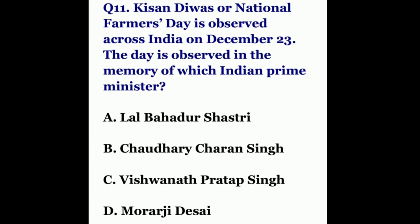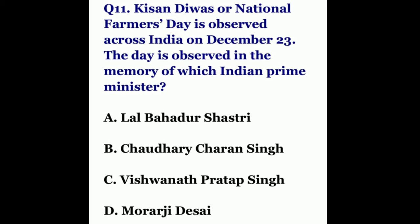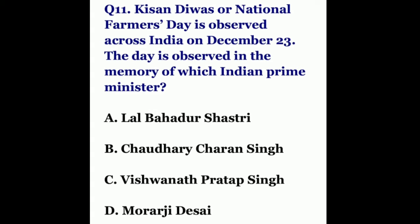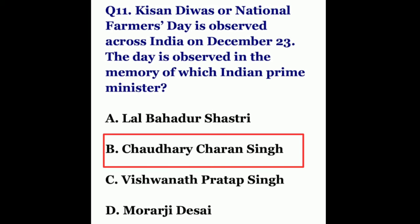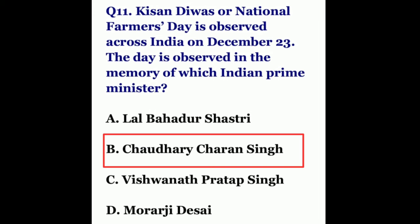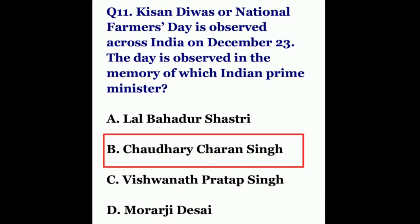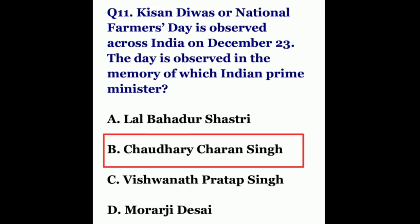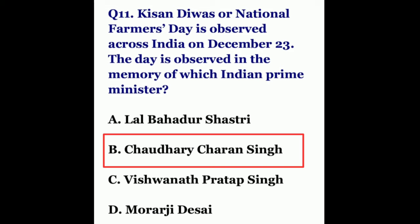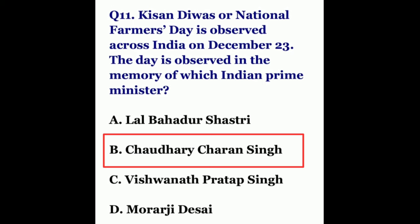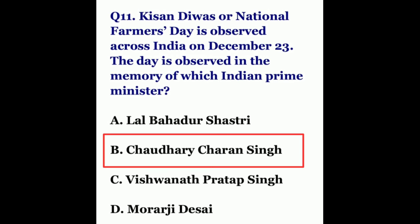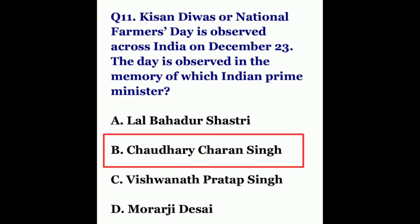Question eleven: Kisan Diwas, or National Farmers Day, is observed across India on 23rd December. The day is observed in memory of which Indian prime minister? The correct answer is Chaudhary Charan Singh, the fifth prime minister of India, who was born on this day. In 2001, the Government of India decided to observe 23rd December every year as Kisan Diwas. During his tenure as prime minister from July 1979 to January 1980, Charan Singh introduced policies to improve farmers' lives and introduced bills for farmers' reforms.